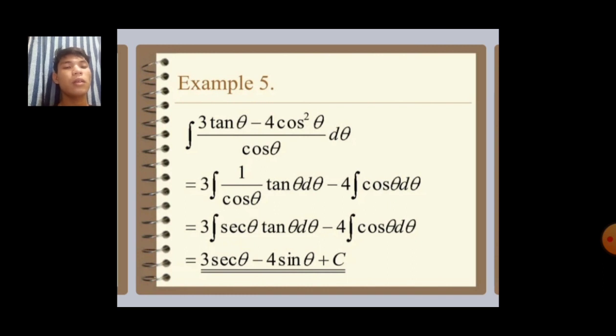Then 3 integral of 1 over cos theta tan theta d theta minus 4 integral of cos theta d theta. Then equal to our final answer 3 sec theta minus 4 sin theta plus c.